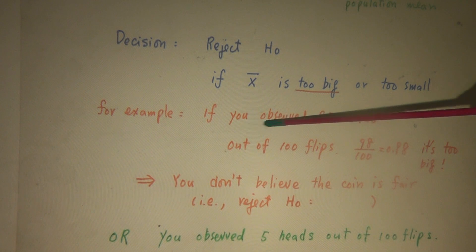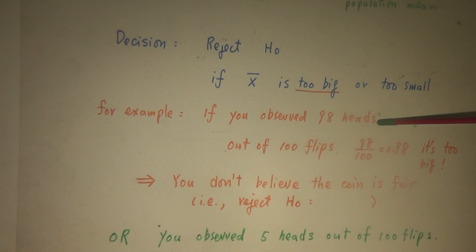If you observe 98 heads out of 100 flips, so 98 over 100, this is your x-bar, 0.98. This is a sample percentage, 98%. It's too big for a fair coin.